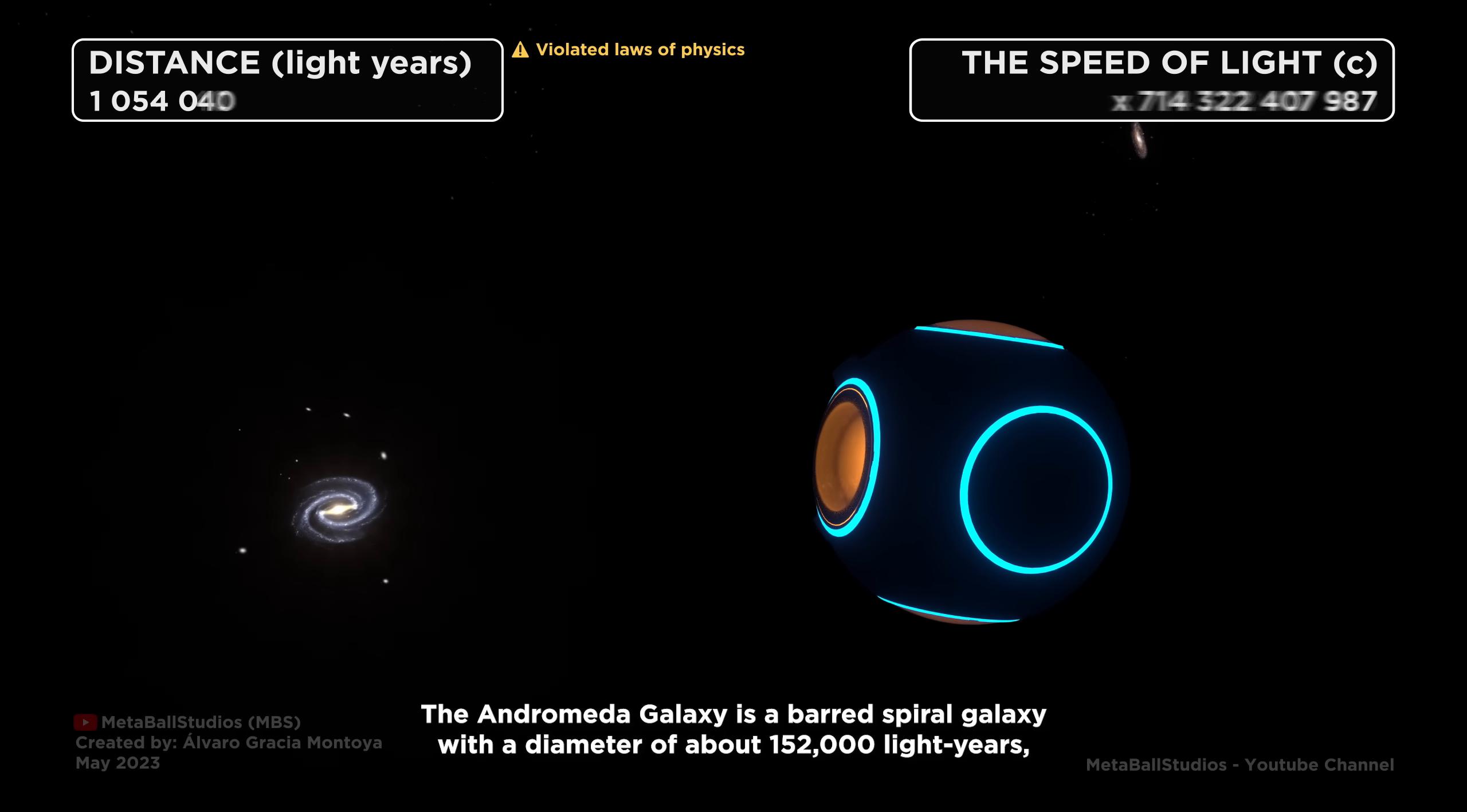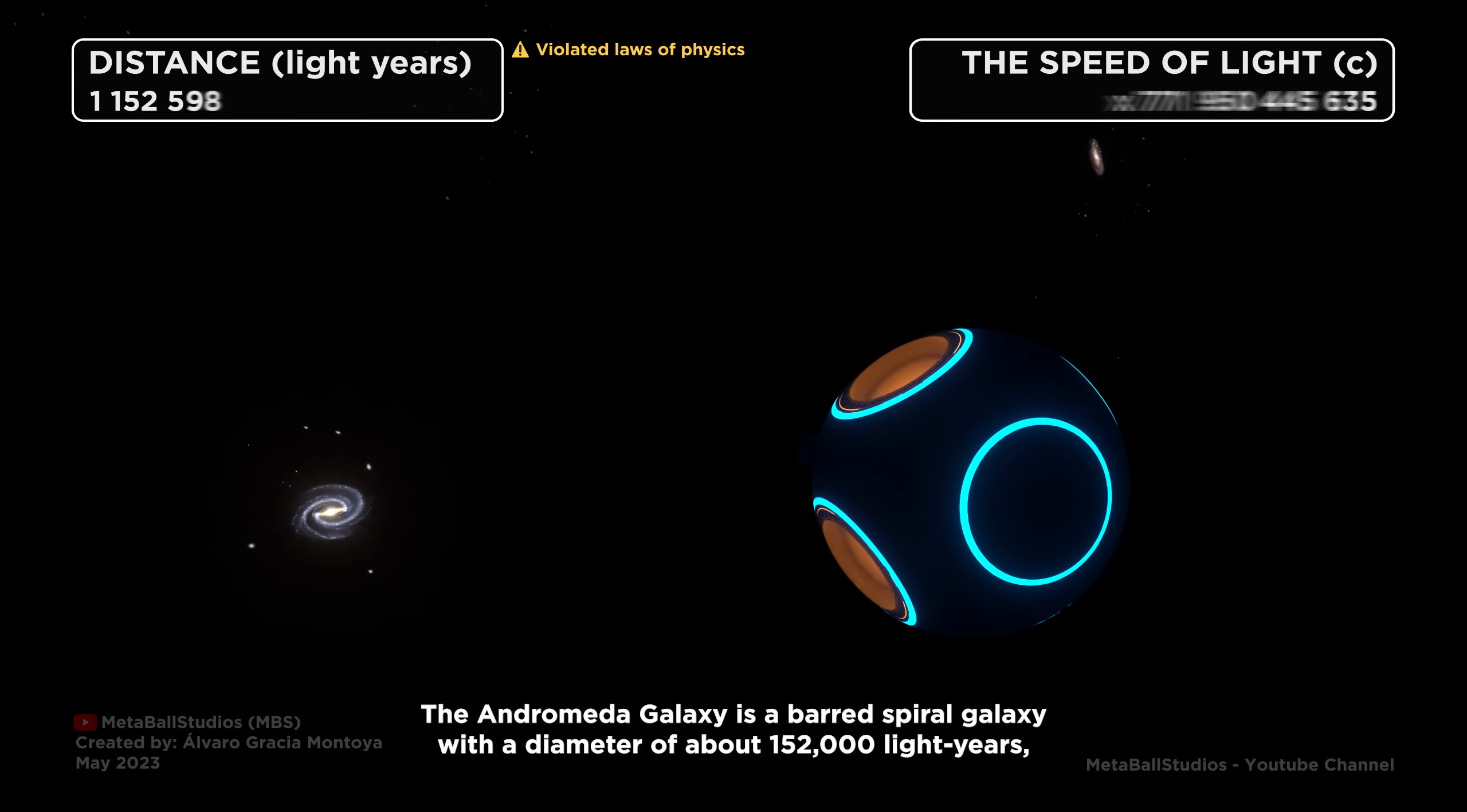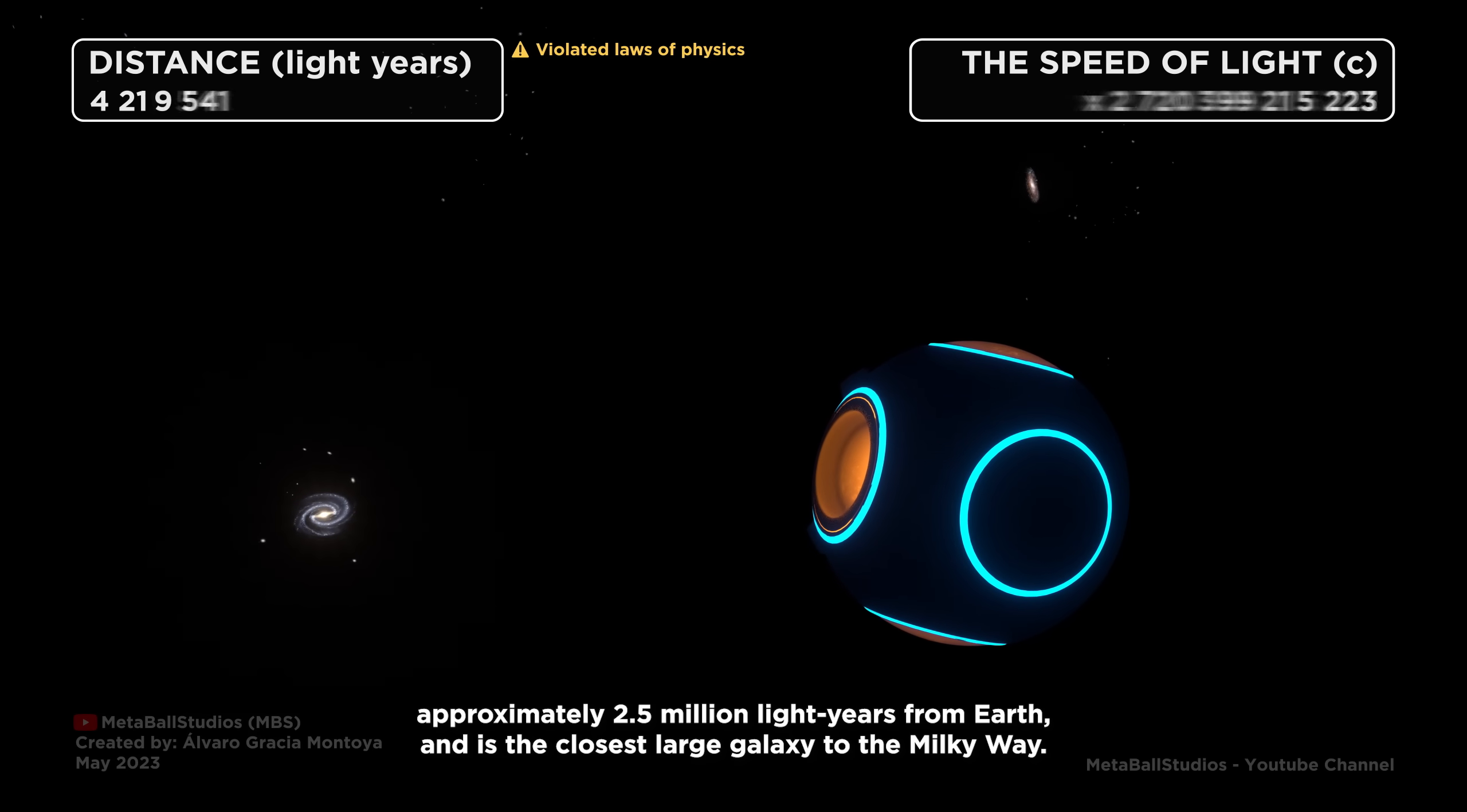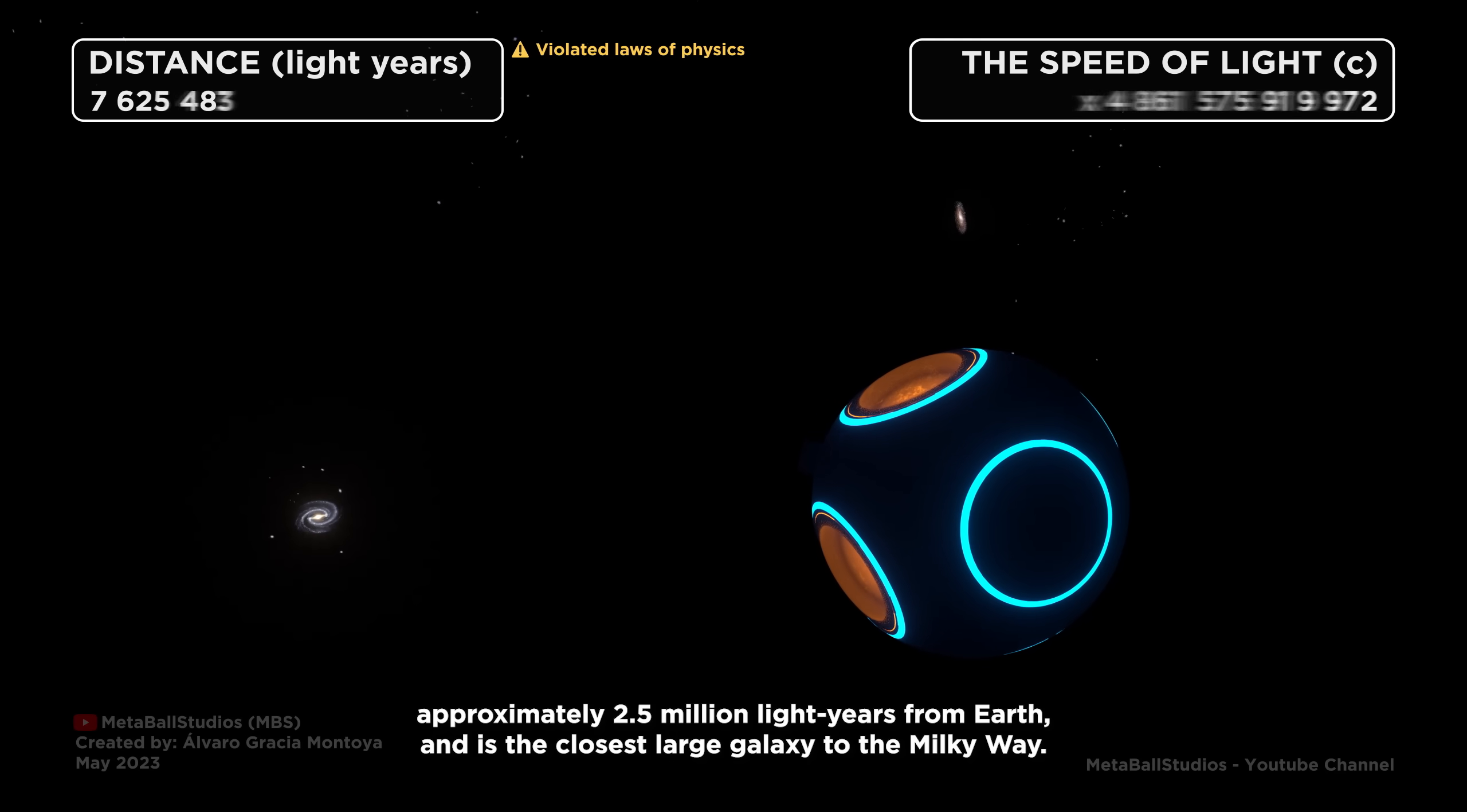The Andromeda galaxy is a barred spiral galaxy with a diameter of about 152,000 light years, approximately 2.5 million light years from Earth, and is the closest large galaxy to the Milky Way.